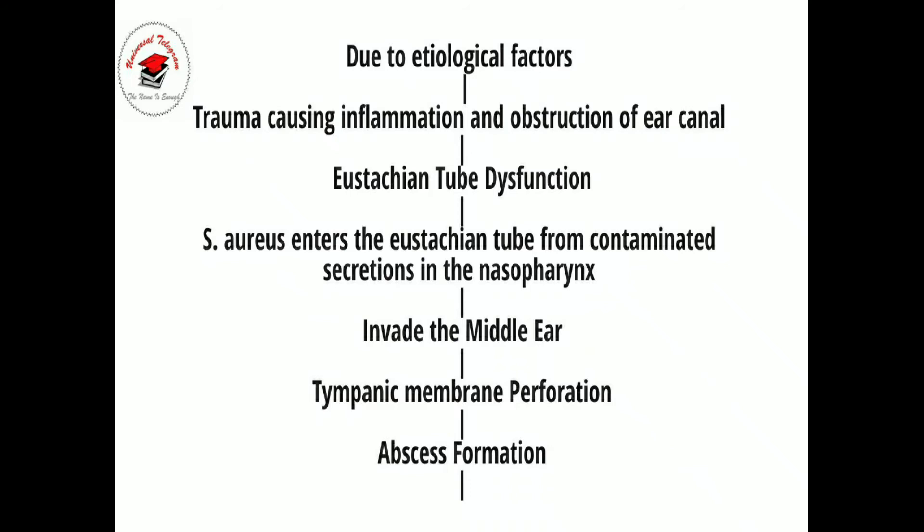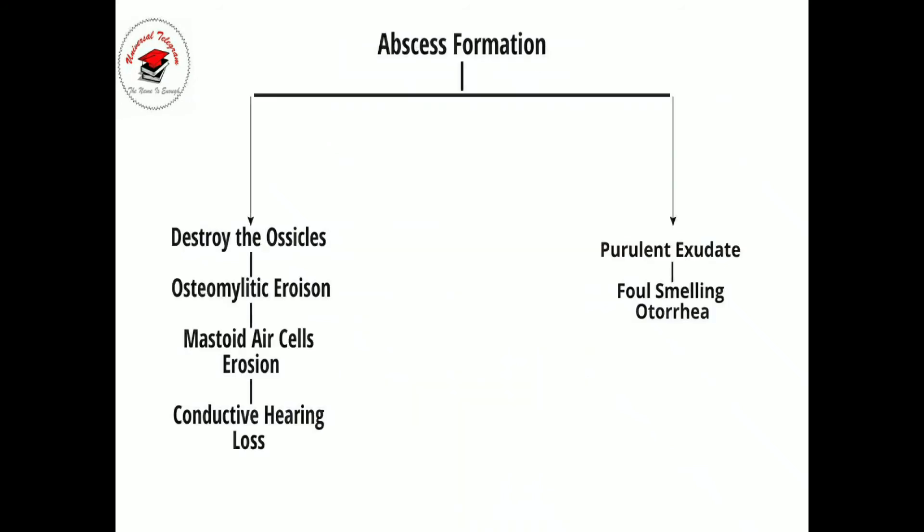The host's attempt at resolving the infection or inflammatory insult manifests as granulation tissue, which can develop into polyps within the middle ear space. Long-standing negative pressure can damage surrounding bone and ossicles, leading to cholesteatoma or loss of ossicular continuity. The cycle of inflammation, ulceration, infection, and granulation tissue formation may continue, destroying surrounding bone margins.